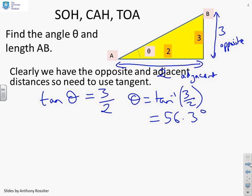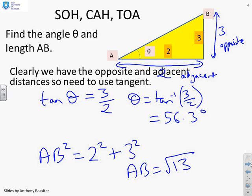Now, the other part of the question, as it said, find the length AB. Now, hopefully it's obvious to you that you can use Pythagoras for this. So I'm going to write AB squared equals 2 squared plus 3 squared. Alternatively, AB equals the square root of 13.